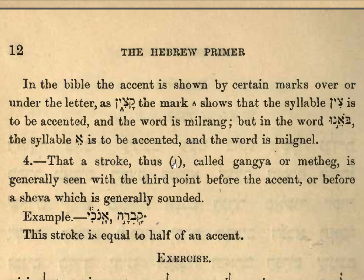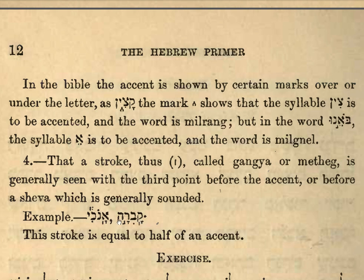That the stroke called gang-nya, or meteg, is generally seen with the third point before the accent, or before a schwa which is then generally sounded. So: ka-bi-ra, ka-bi-ra; a-no-hi, a-no-hi. This stroke is half an accent, so we have two beat points on the word: da-da-da and da-da-da. Not da-da-da and da-da-da, but da-da-da and da-da-da. That's the effect of the gang-nya.